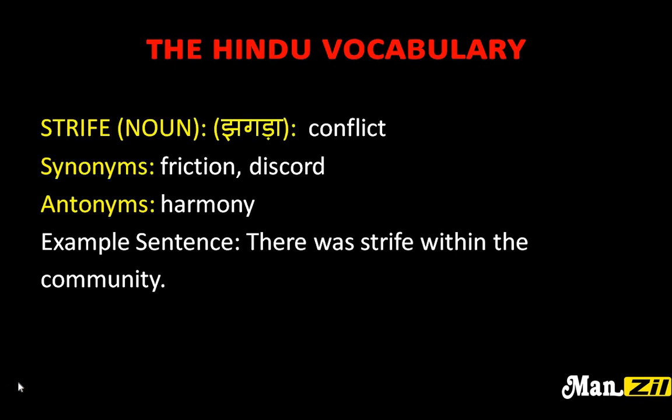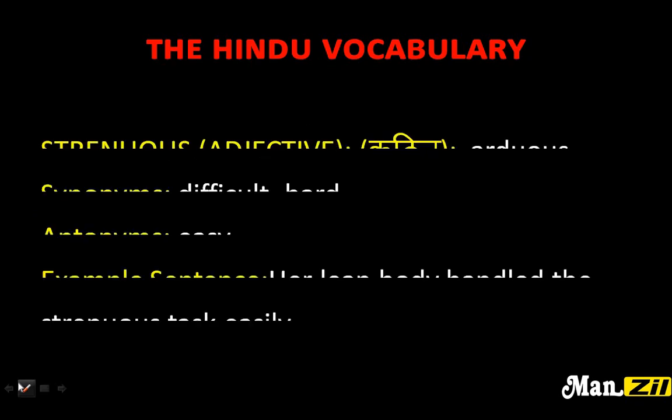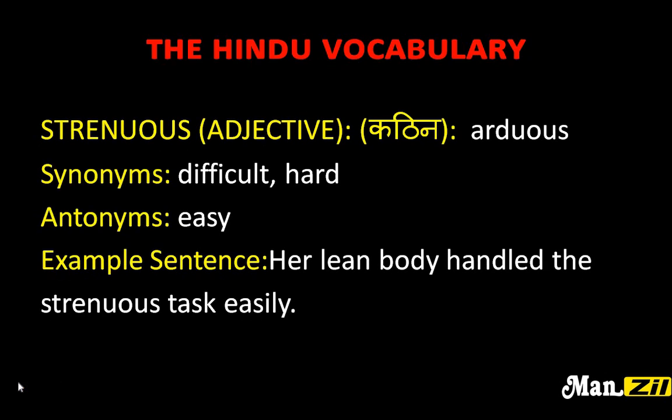Next is 'strife', which is a noun. The meaning of strife is 'jhagda', that is conflict. Synonyms are 'friction' and 'discord', and antonym is 'harmony'. Example sentence: there was strife within the community.